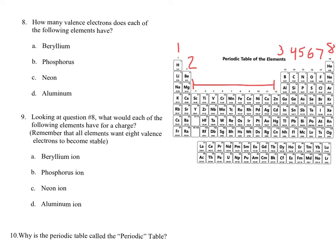Related to valence electrons is charge. Elements either want to gain eight valence electrons or lose their outer shell to open up the filled shell beneath. For the first three valence electrons — one, two, and three — they lose electrons and get a positive charge: plus one, plus two, plus three. Four is in the middle at plus or minus four, though those elements often form covalent bonds. Five needs three more electrons, so it gets negative three. Six needs two more, so negative two. Seven needs one more, so negative one. Group 18 has a full eight, so it has no charge — zero.